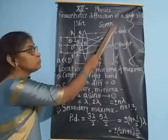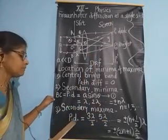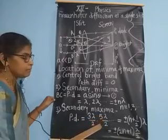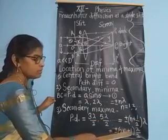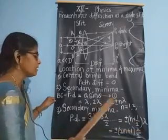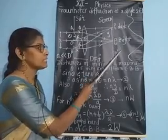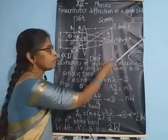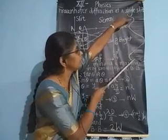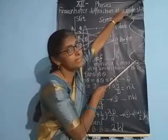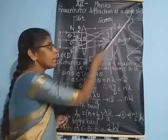The principal maximum is at the center. If the path difference equals 3 lambda by 2, 5 lambda by 2, etc. — that is, plus or minus (2N+1) lambda by 2, which is an odd multiple of half wavelength — then we get secondary maxima. So on the screen we observe the central or principal maximum at the center, with alternating secondary minima and secondary maxima on both sides.